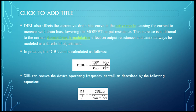DIBL also affects the current versus drain voltage curve in active mode, causing an additional increase in drain bias, lowering the MOSFET output resistance. This increase is additional to the normal channel length modulation effect on the output resistance and cannot always be modeled as a threshold voltage adjustment.